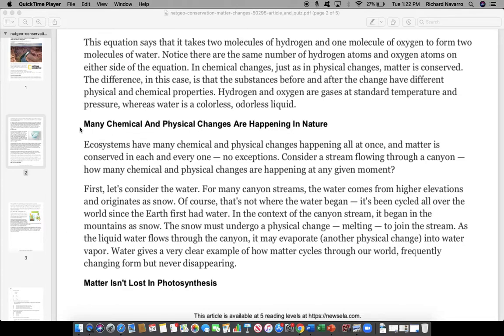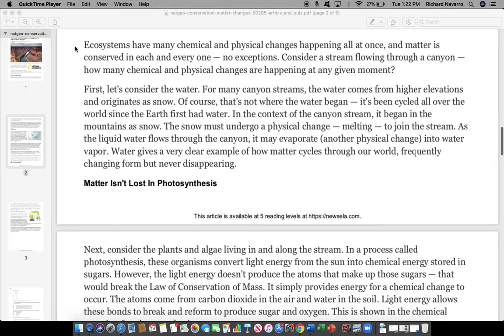Many chemical and physical changes are happening in nature. Ecosystems have many chemical and physical changes happening all at once, and matter is conserved in each and every one, no exceptions. Consider a stream flowing through a canyon. How many chemical and physical changes are happening at any given moment? First, let's consider water.